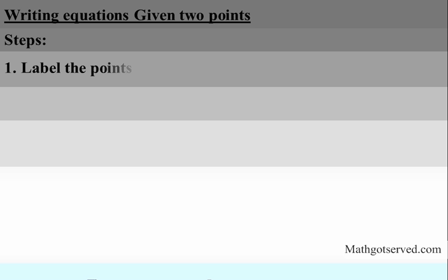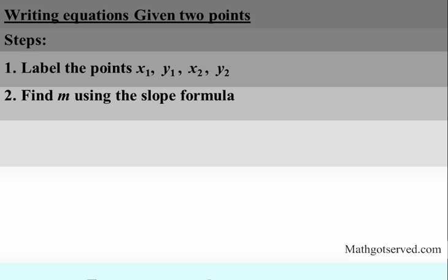Here are the steps. First, you want to label the points x1, y1 and x2, y2. The objective of giving indices to the points makes it easy for you to make an accurate application of the formula without confusing your coordinates. After labeling the points x1, y1, x2, y2, you find the slope using the slope formula.